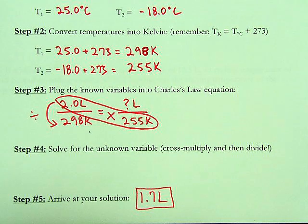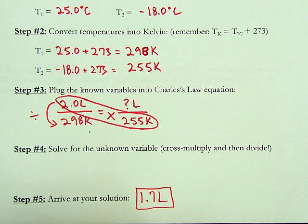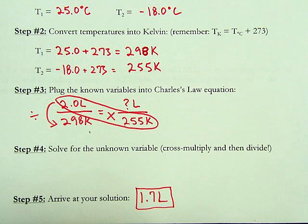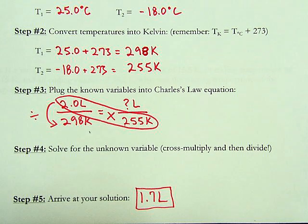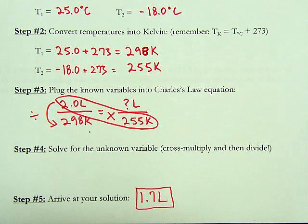Pause and ask yourself if that answer makes any sense. As the temperature goes up, the volume goes up; as the temperature goes down, the volume goes down. In this case, the temperature went down by about 43 Kelvin, so we'd expect the volume to go down — and it did. It went from 2 liters down to 1.7 liters.